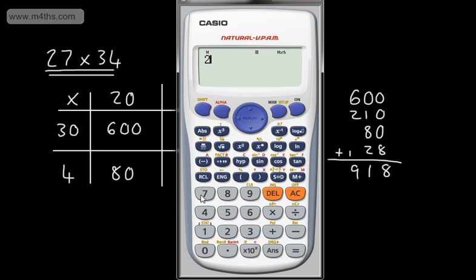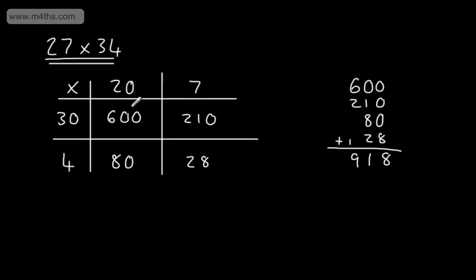If you want to check, 27 multiplied by 34 on the calculator gives us the 918. So that is where we have two double-digit numbers.